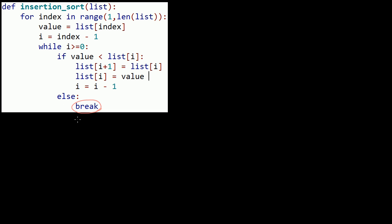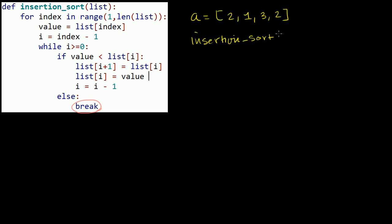Now with that out of the way, let's actually step through this program on a simple example. Let's define a to be equal to 2, 1, 3, 2 — I think that's a good list. And let's assume that we are calling insertion sort on a. So list is, right from the get go, going to refer to 2, 1, 3, 2.